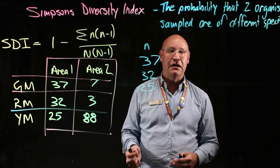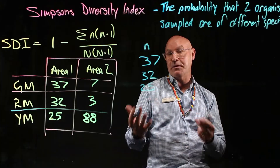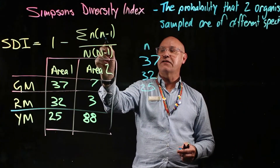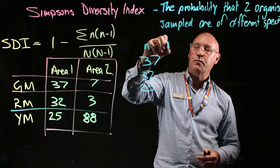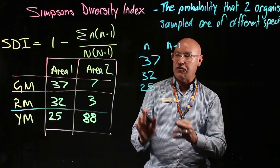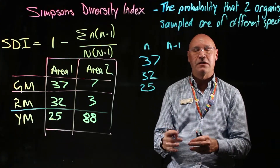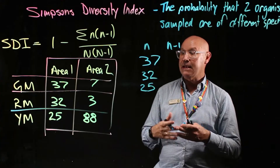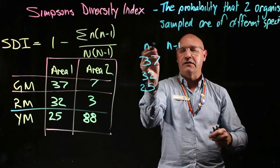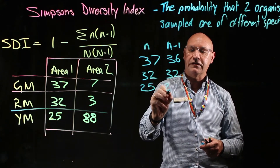Lowercase n simply means the number of organisms of a species — the population. Then we need to do the next step, which is n minus one. I highly recommend you set out your SDI calculations in this particular way, just so you don't make any mistakes. So n minus one gives us: 36, 31, and 24.